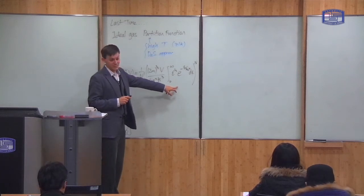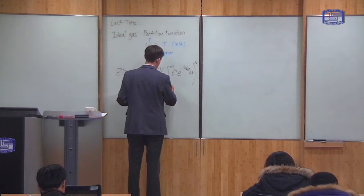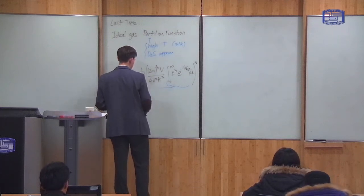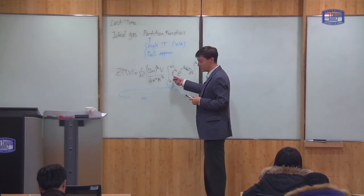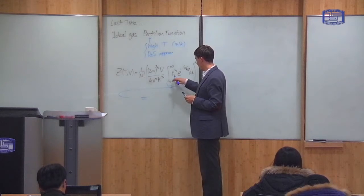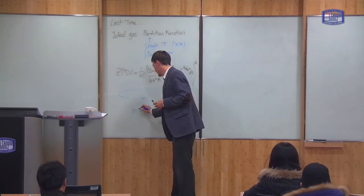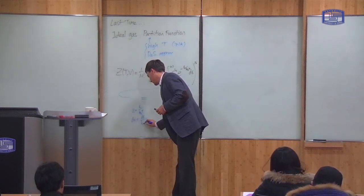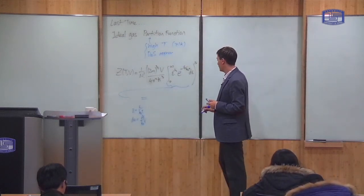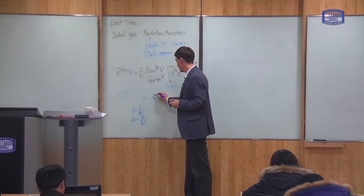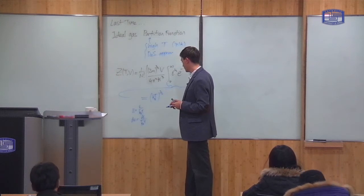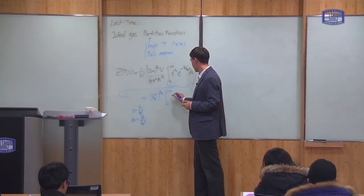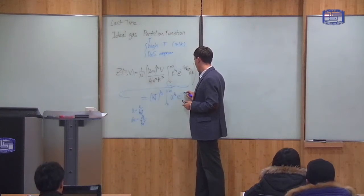To complete this, we need to calculate what this integral is. I can change variables: let u = ε/kBT, so du = dε/kBT. Then this integral becomes kBT to the 3/2 — one factor of kBT from the substitution and another from the ε^(1/2) — times the integral from 0 to infinity of u^(1/2) times e^(−u) du.